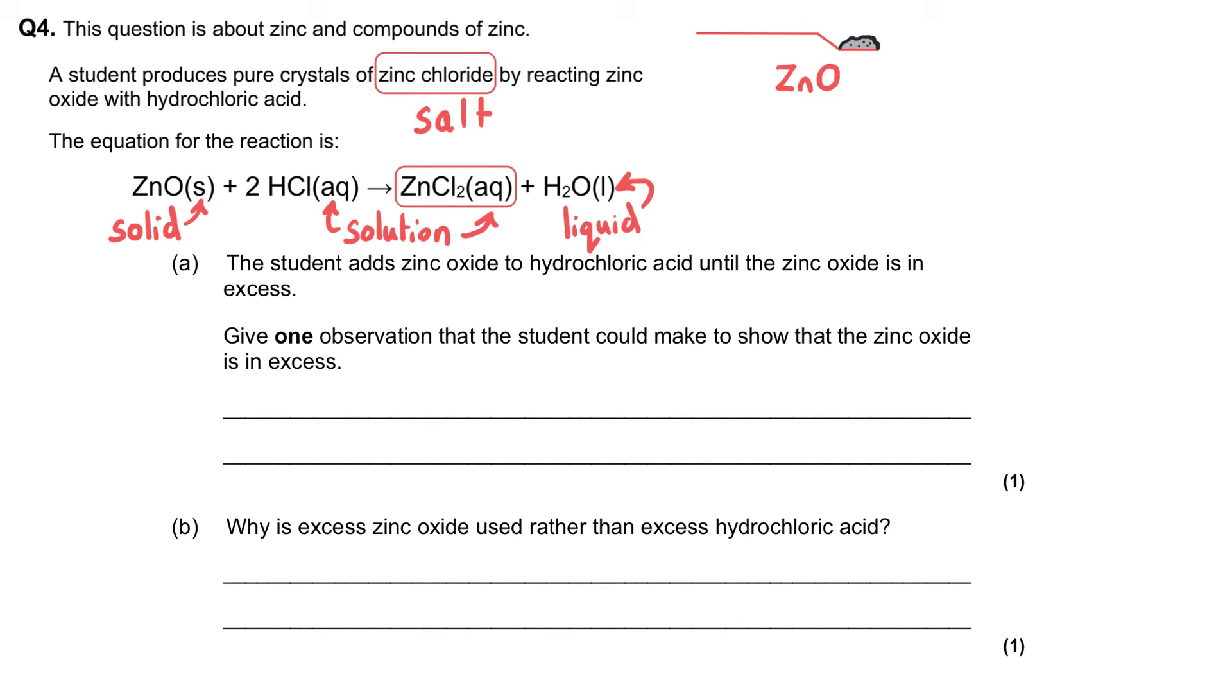The student adds zinc oxide to the hydrochloric acid until the zinc oxide is in excess. Excess means there is more than we need and there will be some left over. Give one observation that the student could make to show that the zinc oxide is in excess.